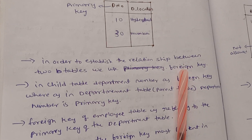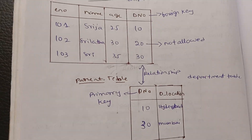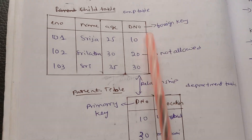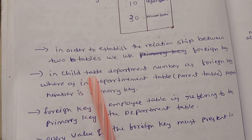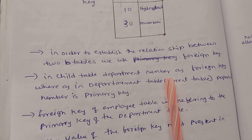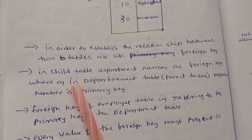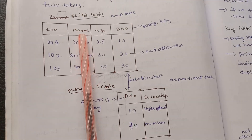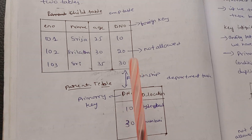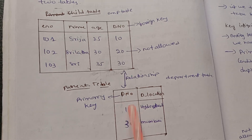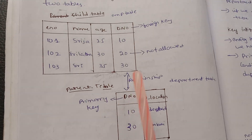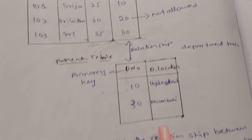We use the department number as the foreign key in the child table (employee table), whereas in the parent table (department table), the department number is the primary key. So here we have two tables: the child table and the parent table.